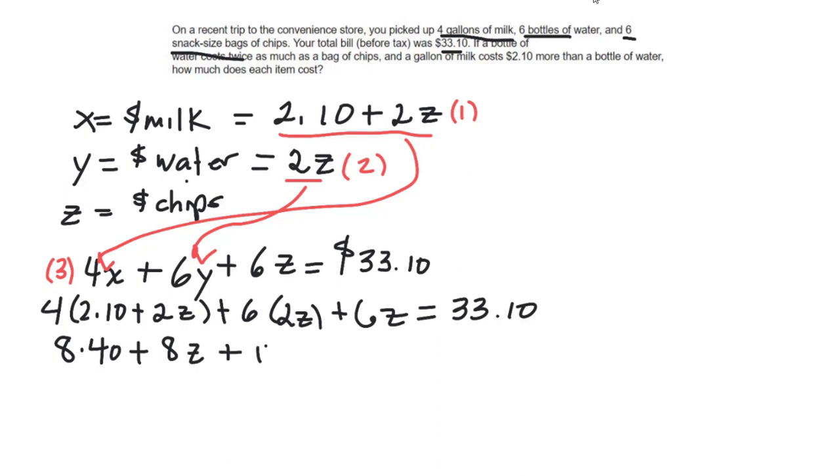Then plus 12Z is my 33.10. And what I do is I collect all the like terms. Oh, I missed my 6Z, would you let me miss that? Four plus my 6Z. I collect all the like terms, so that would be 8 plus 12, 20, plus 6, the one I forgot, 26Z.